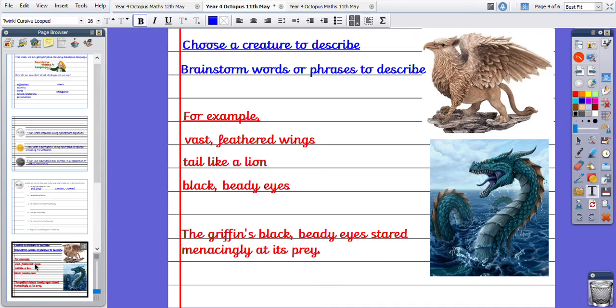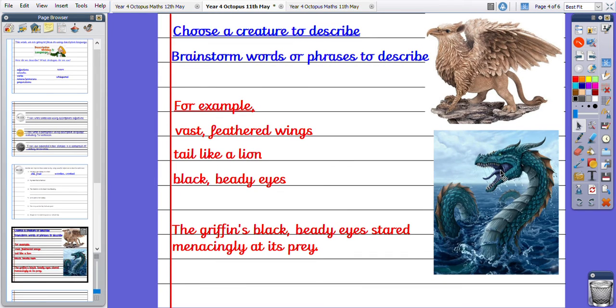Moving on to gold and platinum then. For gold, I want you to be using descriptive sentences. So short, standalone sentences on their own. But to work towards platinum, you need to write a paragraph of writing. And you're going to be describing these creatures on the right. So you could choose one of these to focus on, or you could have another little look on Google for some more images to help you.